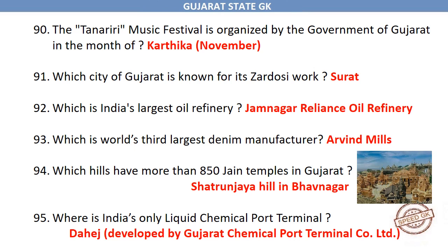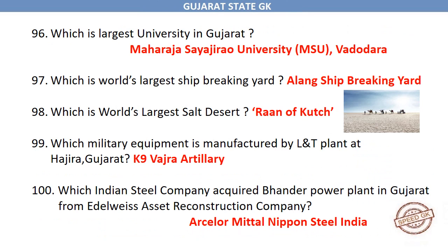Which city of Gujarat is known for its Zardozi work? Surat. Which is India's largest oil refinery? Jamnagar Reliance Oil Refinery. Which is the world's third largest denim manufacturer? Arvind Mills. Which hills have more than 850 Jain temples in Gujarat? Shatrunjaya Hill in Bhavnagar. Where is India's only liquid chemical port terminal? Dahej, developed by Gujarat Chemical Port Terminal Co. Ltd. Which is the largest university in Gujarat? Maharaja Sayajirao University, MSU, Vadodara. Which is the world's largest ship-breaking yard? Alang Ship-breaking Yard.